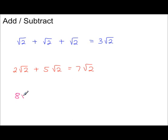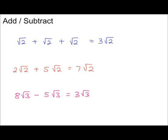8 root 2 minus 5 root 3 — wait, 8 minus 5 is 3, so that's 3 lots of root 3. And 4 root 2 plus 5 root 7: you can't add these two together because one is a root 2 and one is a root 7, so we can't simplify this one.